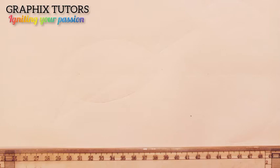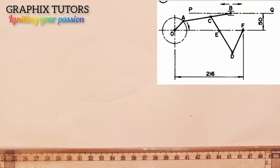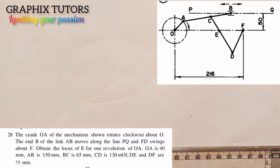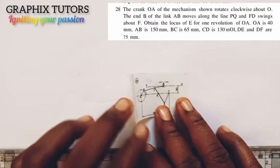Hello everyone, my name is Graphics. If you look at the top right corner of the screen you see a problem that is based on a link mechanism, and we are told to replicate that diagram. The question says that the crank OE of the mechanism shown rotates clockwise about O. The end B of the link AB moves along the line PQ, and FD swings about F. Obtain the locus of E for one revolution of OA.